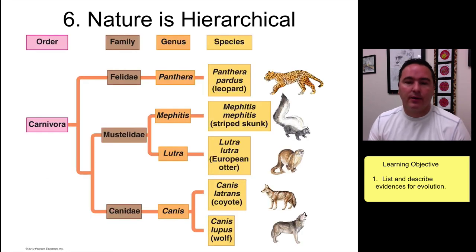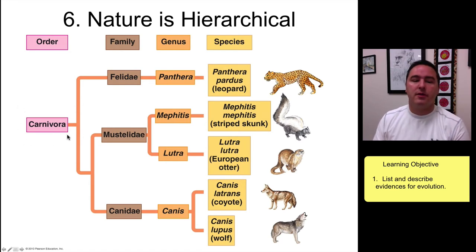Number six: when you look at nature, it's hierarchical. Here's an example from the carnivora. These organisms are all organized in a way that you see a hierarchical structure. This is the best way to organize life, based on hierarchy. This was done even before evolution was talked about by Darwin. For example, Carl Linnaeus came up with the idea of naming things species, genus, family—this Linnaean classification system.